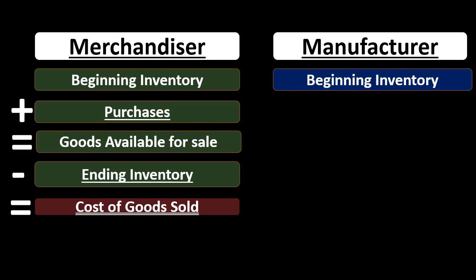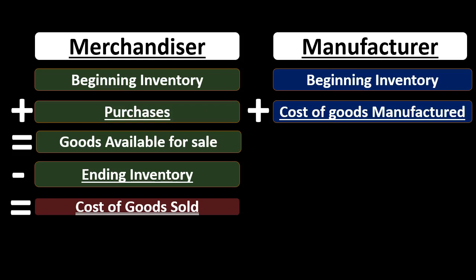For a manufacturer, we still have that same beginning inventory, but rather than adding purchases, we add cost of goods manufactured. We didn't simply purchase these finished goods — we purchased materials, but the cost of goods manufactured also includes the direct labor and overhead that went into making them. This number comes from our production process, and it replaces purchases as the key activity figure.